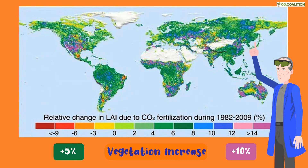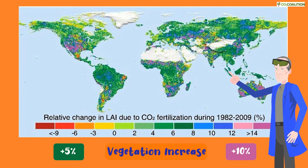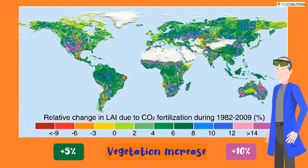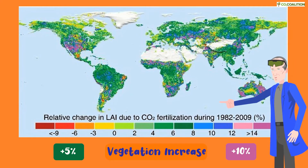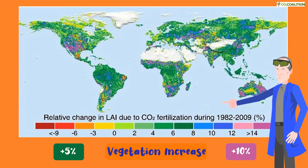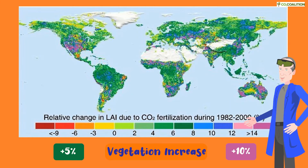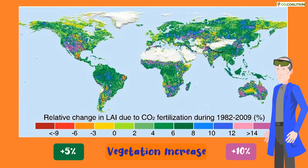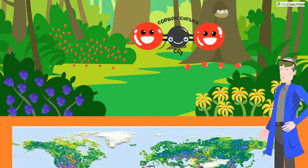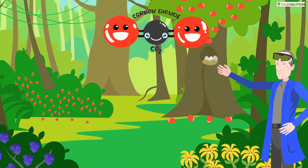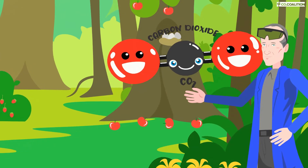This map from satellite data over four recent decades shows how the area covered by plant leaves has grown. The green colors show where vegetation has grown by 5 to 6 percent. The purple colors are where vegetation has grown by 10 to 12 percent — that's huge. A little more carbon dioxide is making the earth greener.